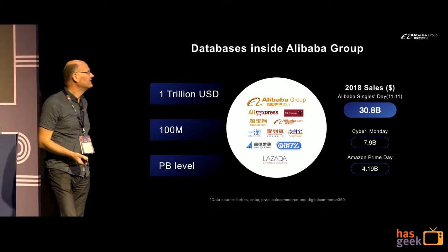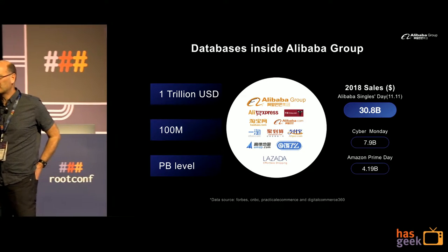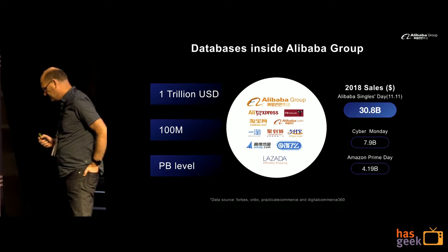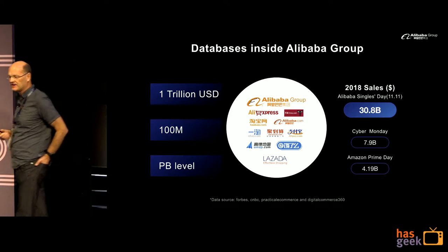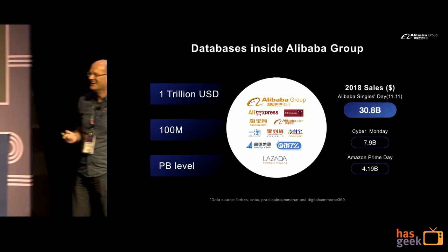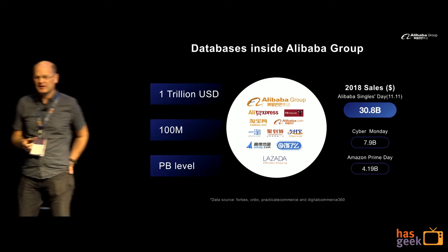At Alibaba, we have a lot of databases. You can think of it as the Chinese version of Amazon, PayPal, eBay, and YouTube combined — it's the biggest e-commerce site in China. We also have a cloud offering that is the biggest in China. The e-commerce side has sales of one trillion US dollars a year — something like 70 lakh crore. On average, there are about 100 million transactions a day.